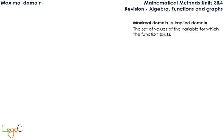In this video we are going to look at the maximal domain of functions. The maximal domain, or the implied domain, is the set of values of the variable for which the function exists.